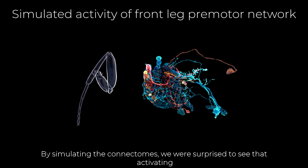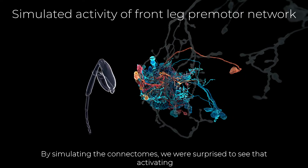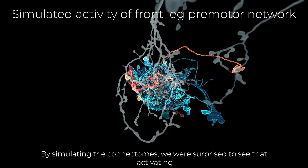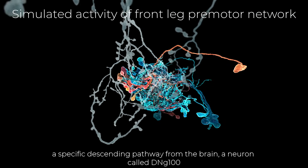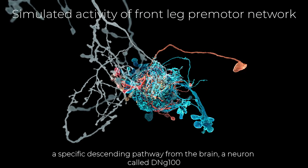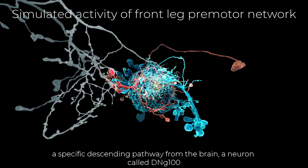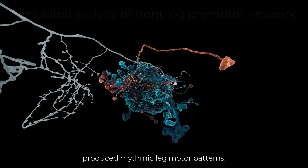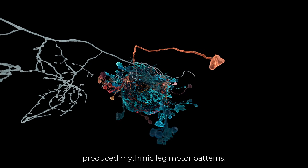By simulating the connectomes, we were surprised to see that activating a specific descending pathway from the brain, a neuron called DNG100, produced rhythmic leg motor patterns.